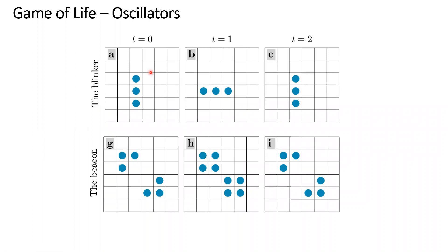There are also oscillators. This cell here has exactly three alive neighbors — it's going to become alive in the next step. But this one has only one alive neighbor, which means it's going to die. After two steps, it will go back to its initial state, meaning it will keep oscillating forever between two configurations. Every oscillator doesn't have to have a period of two — there are more complicated oscillators with periods of five, ten, or twenty steps.